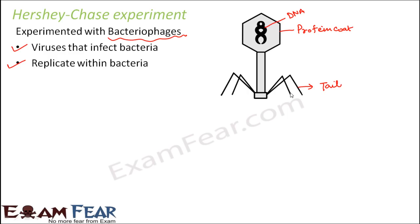Now the question is, what is being injected? It is the genetic material that is being injected. So what is that genetic material — is it the protein that is getting injected, or is it the DNA that is getting injected? These are the two options that can be injected inside the body of the bacterium. And whatever is getting injected, that particle has the genetic information — that is why it is able to produce more and more viruses.